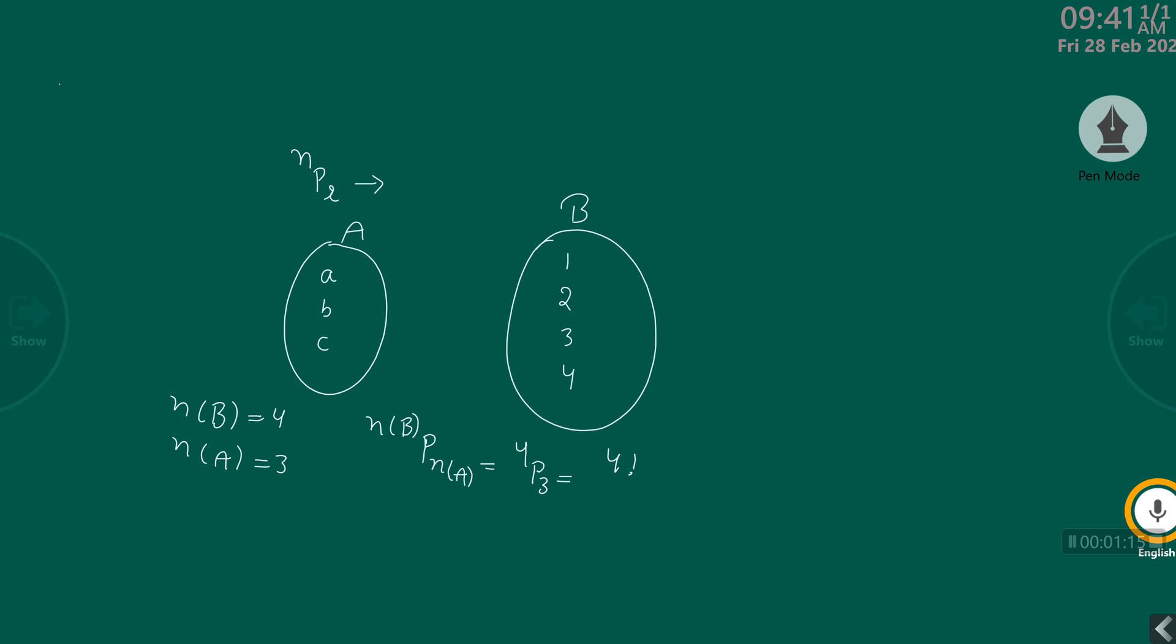Now, the answer will be 4 factorial upon (4 minus 3) factorial, which equals 4 times 3 times 2 times 1 upon 1 factorial. The answer is 24.